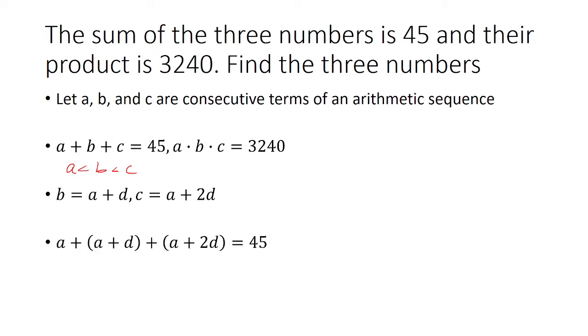So now I can replace this equation with these two. So we have A plus A plus D plus A plus 2D. That's going to equal 45. So that is 3A plus 3D equals 45. And if we divide both sides by 3, we get A plus D equals 15.